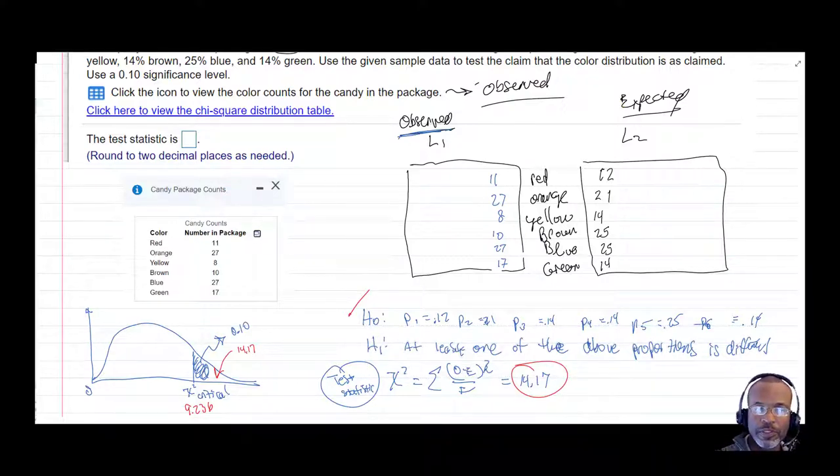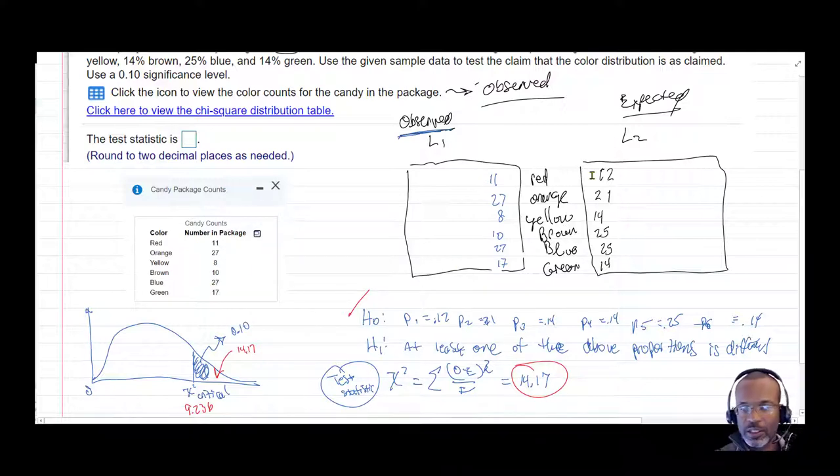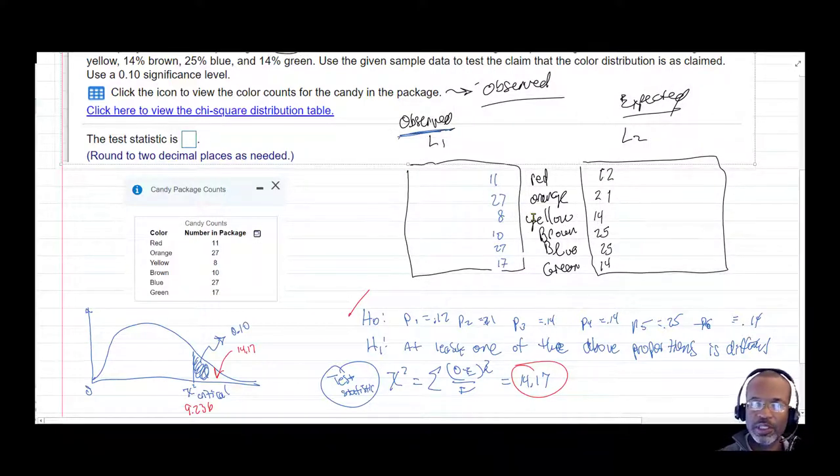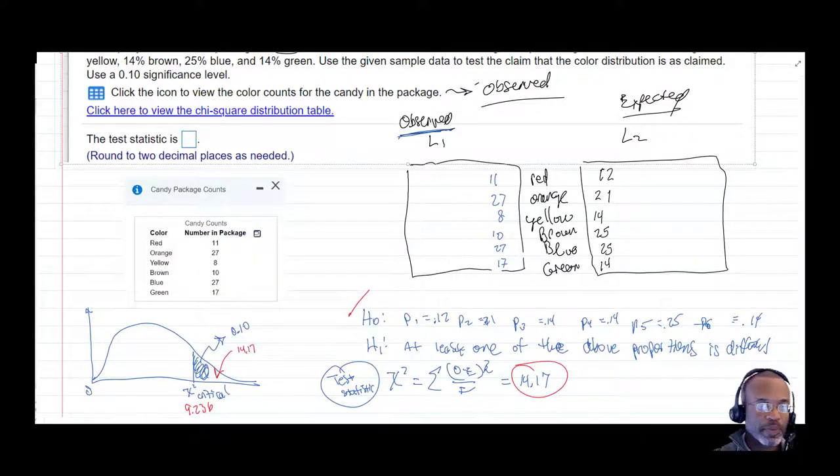So the results don't necessarily tell you which one is necessarily the one that contributes or is the one that is out of proportion. But it says at least one. And the red is probably not out of order. The yellow is almost half what was observed was almost half as many as what might have been expected, 8 versus 14. But that's how you would do the goodness of fit test for that one.